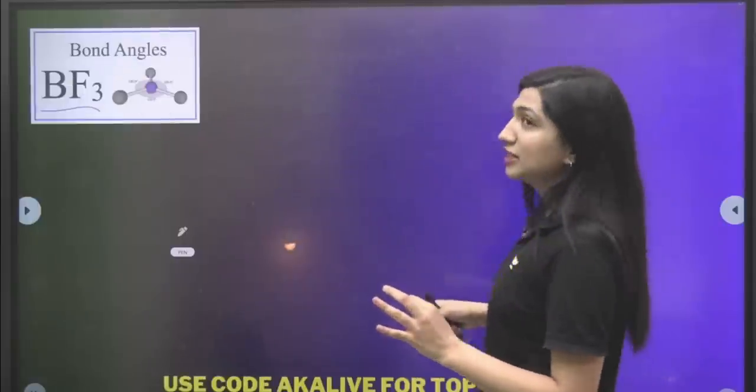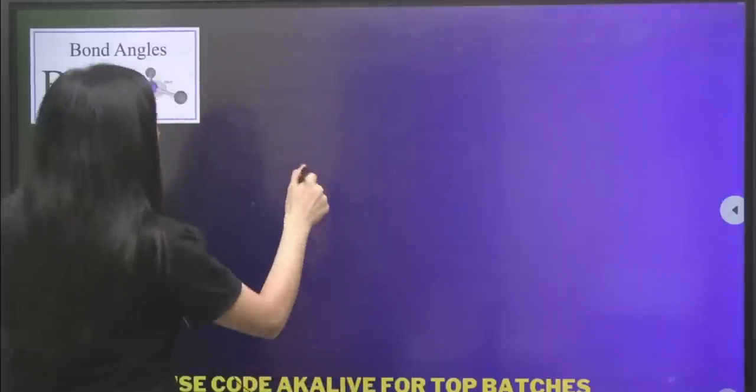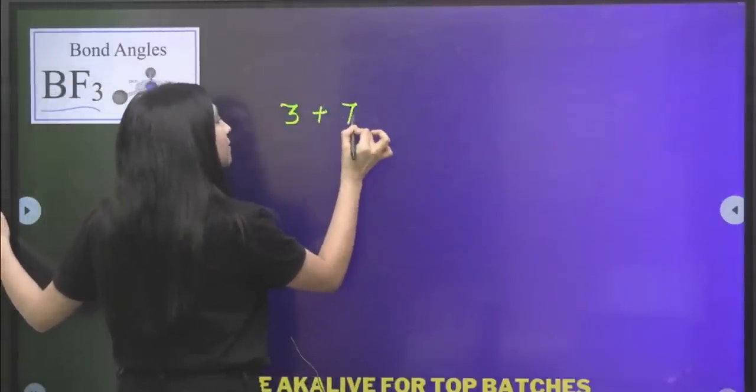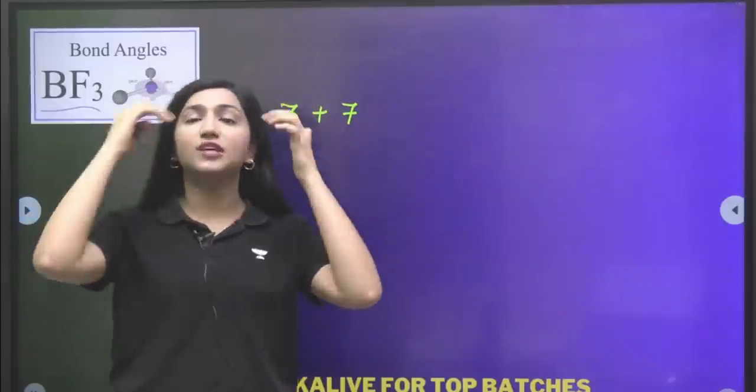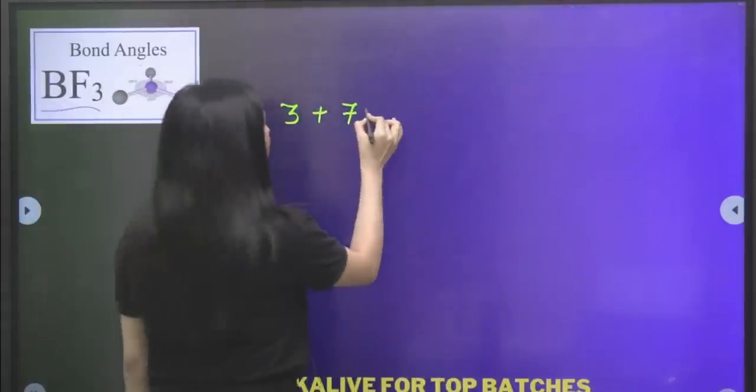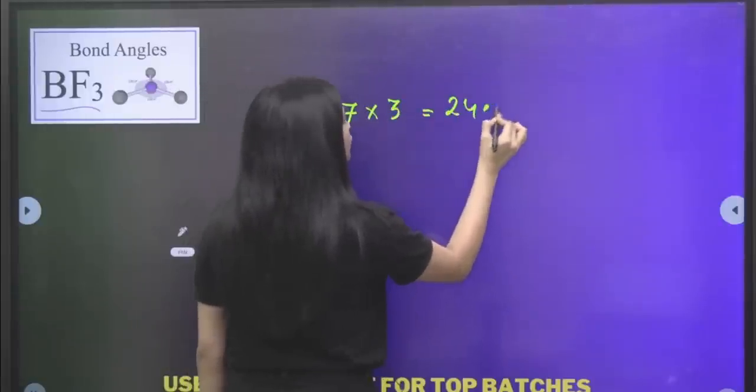Let's solve this question. For example, you have BF3. Boron atom has three valence electrons. Then you have fluorine from group 17. How many valence electrons? 7. Three fluorine atoms. So 7 into 3, how much is it? 24 electrons. If we divide it by 8...